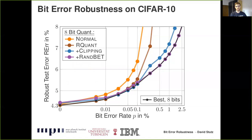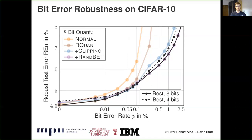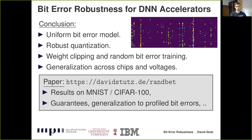The Pareto-optimal curve shows the lowest robust test error achievable for each bit error rate. For low bit error rates, robust quantization and clipping is sufficient; for high bit error rates, random bit error training is needed. Our approach is also applicable to low-precision models — for 4-bit quantization, for example — combining the energy savings of low-precision quantization with those of low-voltage operation. In the paper, we also show that our approach generalizes to real-profile bit errors, even when they deviate significantly from our model, such as when bit errors are strongly aligned along columns.